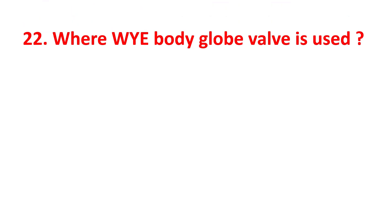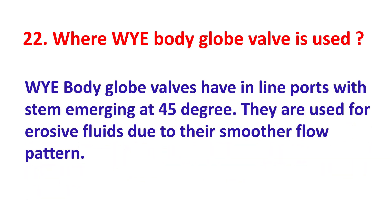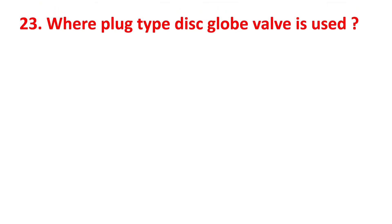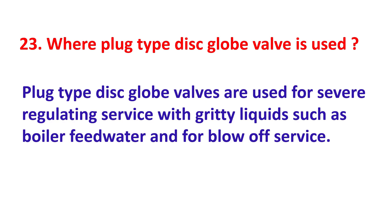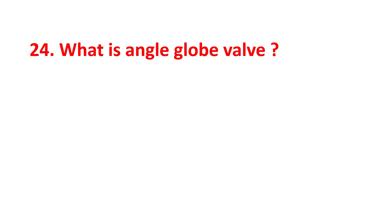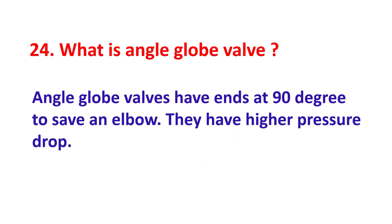Where is the WYE body globe valve used? WYE body globe valves have inline ports with the stem angled at 45 degrees. They are used for erosive fluids due to their smoother flow pattern. Where is a plug type disc globe valve used? Plug type disc globe valves are used for severe regulating service with viscous liquids such as boiler feed water and for blow-off service. What is an angle globe valve? Angle globe valves have ends at 90 degrees to save an elbow and have higher pressure drop.